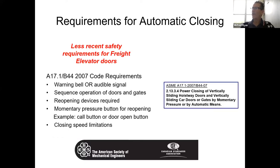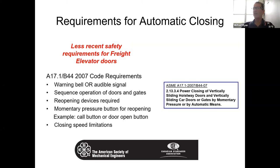Later, 2.13.3.4 — this is automatic closing. The doors and gates would close automatically. The code required some sort of audible signal, a bell or a gong, to let people know the gates and doors would close automatically. If that was the case, sequence operation had to be provided. The reversing device had to be provided, and closing speeds were adjusted — doors and gates were probably closed at a slower speed because they were closing automatically. So the progression changed from constant pressure to sequence to auto close.